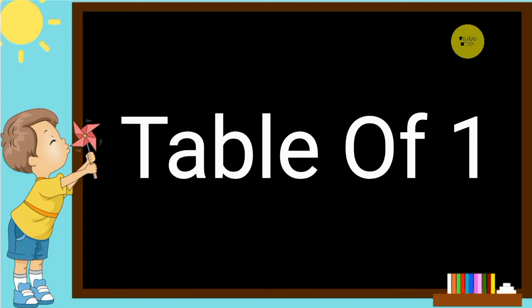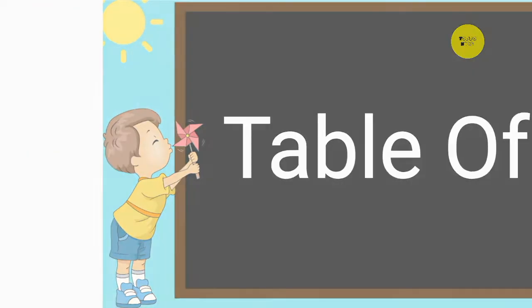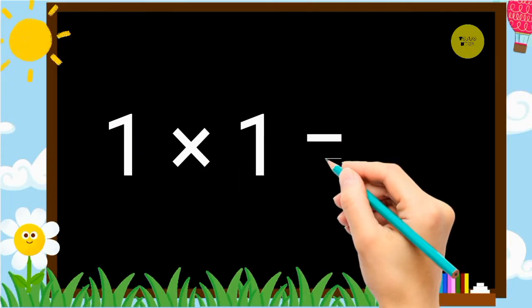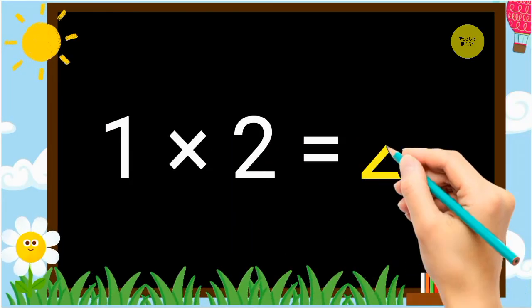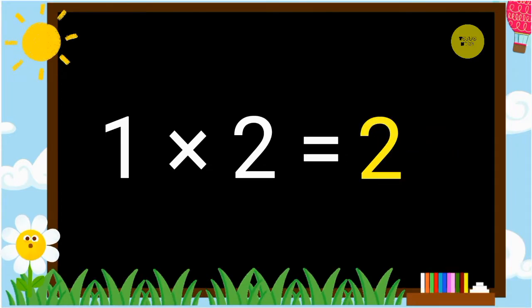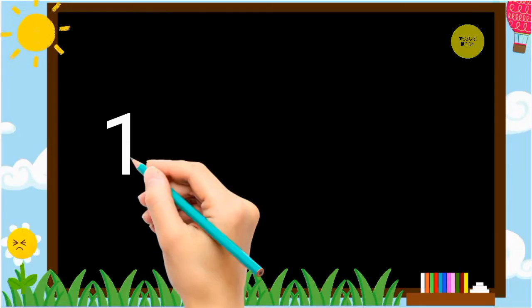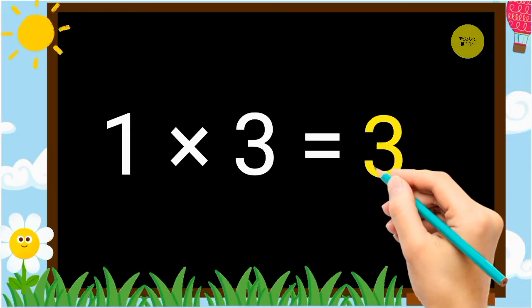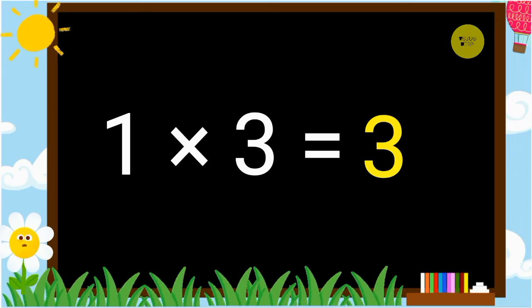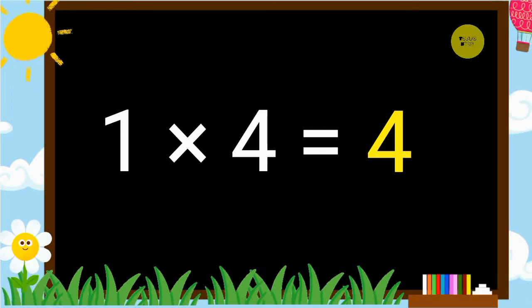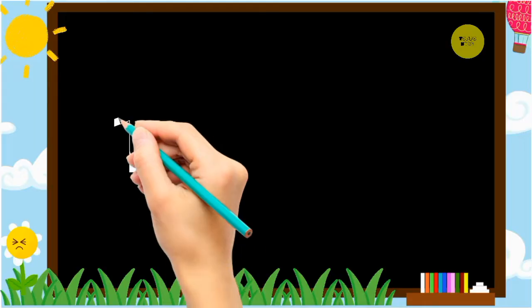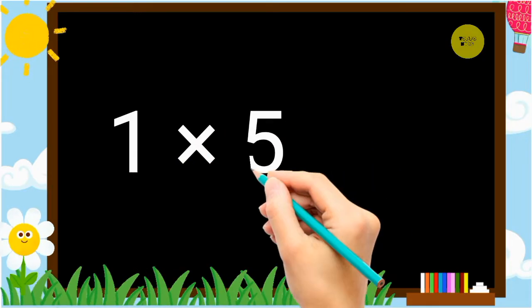Table of 1. 1 1's a 1. 1 2's a 2. 1 3's a 3. 1 4's a 4. 1 5's a 5.